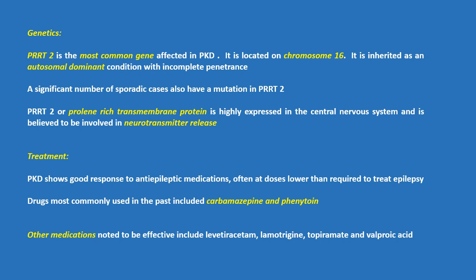Regarding genetics, PRRT2 is the most common gene affected in PKD. It is located on chromosome 16 and is inherited as an autosomal dominant condition with incomplete penetrance. A significant number of sporadic cases also have a mutation in PRRT2. PRRT2, or proline-rich transmembrane protein, is highly expressed in the central nervous system and is believed to be involved in neurotransmitter release.